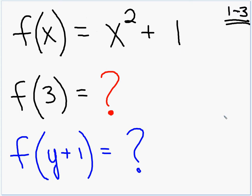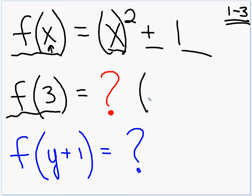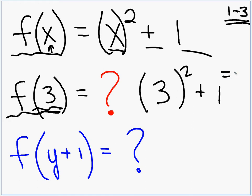For the warm-up, I have some functions here. f of x is x squared plus 1. So what would f of 3 be? We take out the x and replace it with the 3. That becomes 3 squared plus 1. Think of the x as a placeholder — an empty set of parentheses — something squared plus 1. In this case we're putting a 3 in. 3 squared is 9, 9 plus 1 is 10.